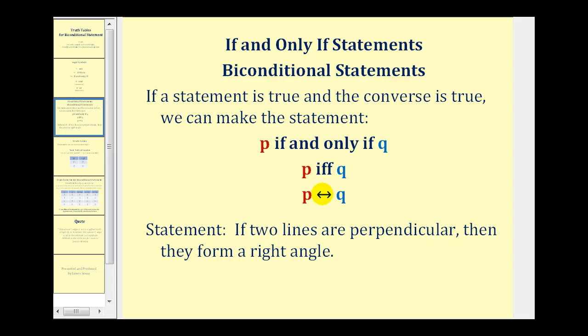So this would be an example of an if and only if statement. So we could state that two lines are perpendicular if and only if they form a right angle.